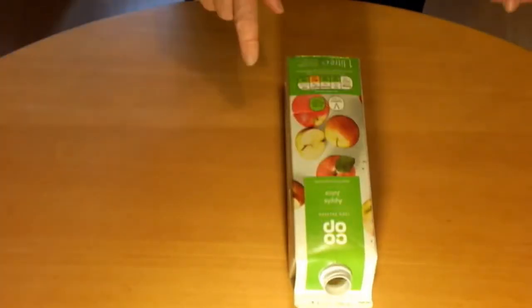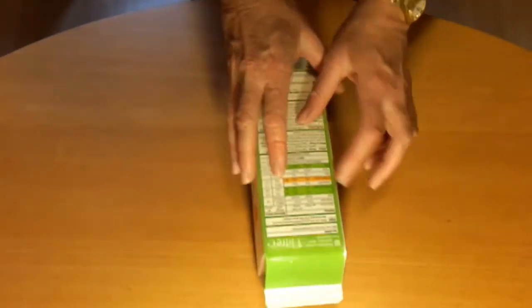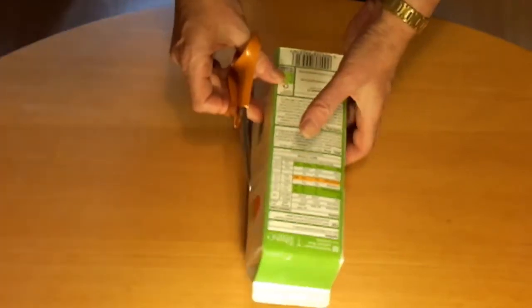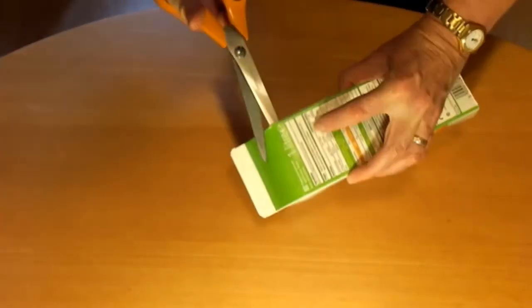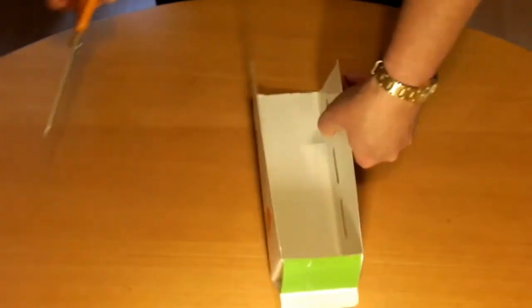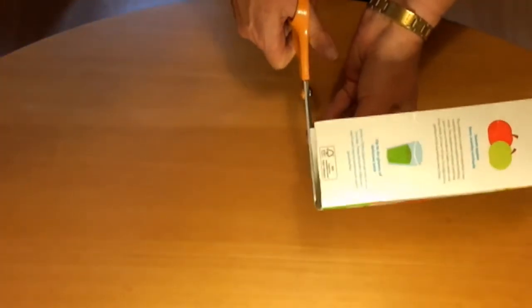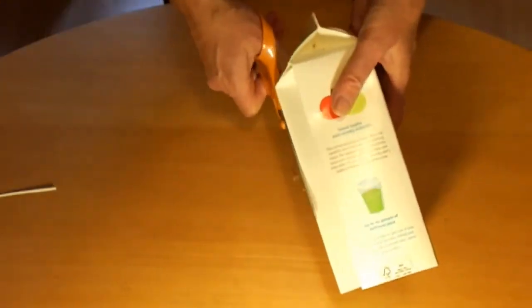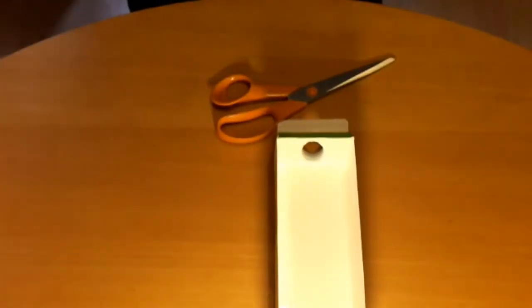Use the large scissors to cut off the side opposite the spout by cutting below the fold line. Neaten up the bottom and sides. Slide this onto the first juice carton and tape in position. The two spouts should be on the same side.